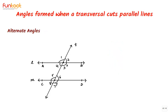Let us see what alternate angles are. The word alternate refers to being on the other side of the transversal. So if we have two alternate angles, one will lie to the left of the transversal and the other will lie to the right — if one lies to the right, then the other one will lie to the left.